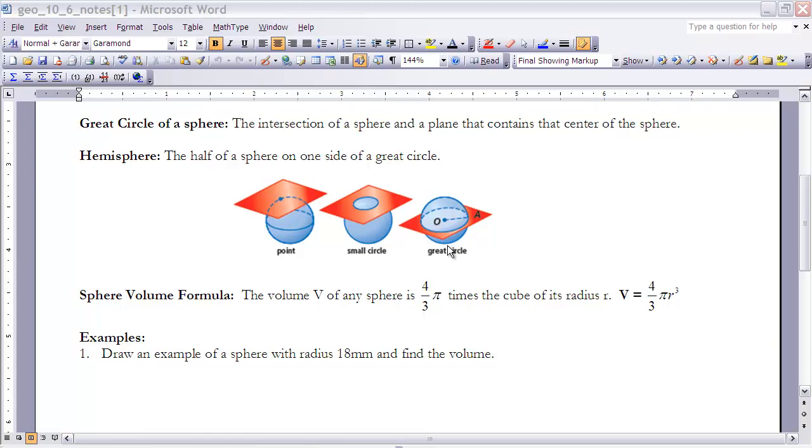The great circle becomes important, especially when we look at mapping. If you're mapping something on a sphere, the shortest distance between any two points must be along a great circle. So when you're looking at flying from one city to the next...